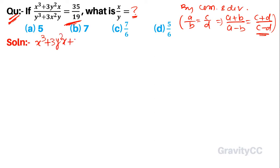Plus y³ + 3x²y, minus x³ + 3y²x in the numerator, and in the denominator minus y³ and minus 3x²y.